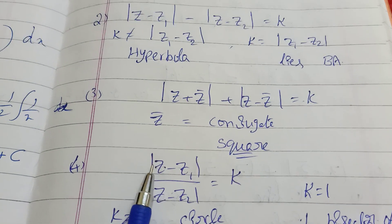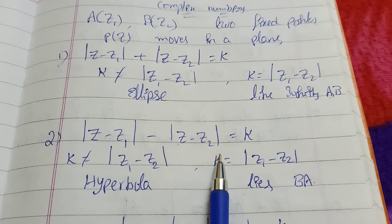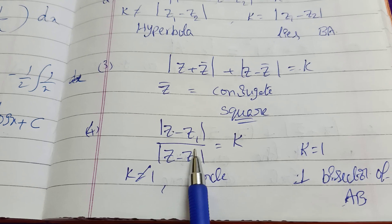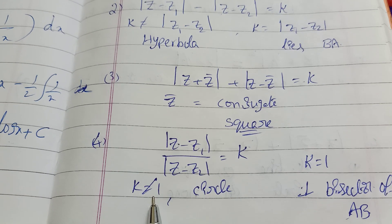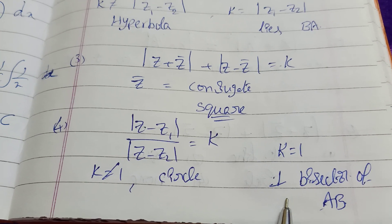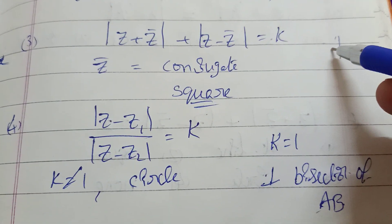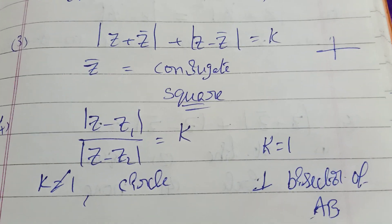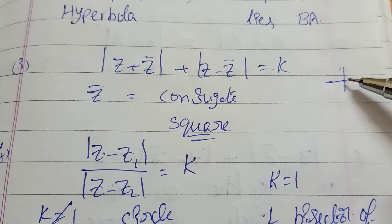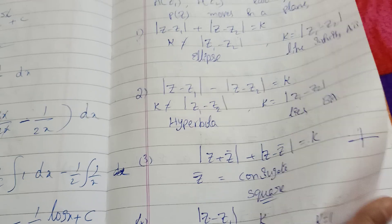Next, the modulus of z minus Z1 divided by z minus Z2 equals k. If the division equals k with a plus, it is plus. Minus equals minus. Division by k equals k. When k equals 1, we get a specific condition. We are going to put x value equal to 0.